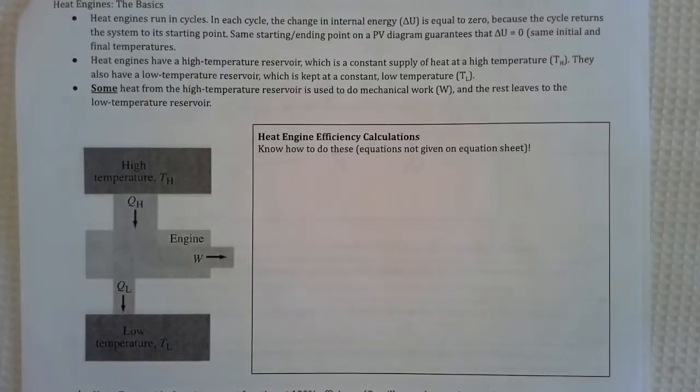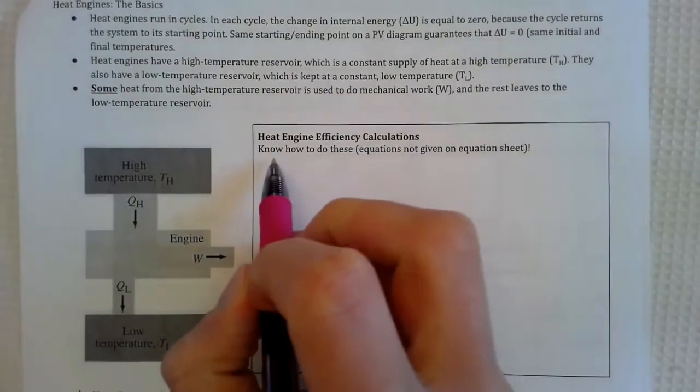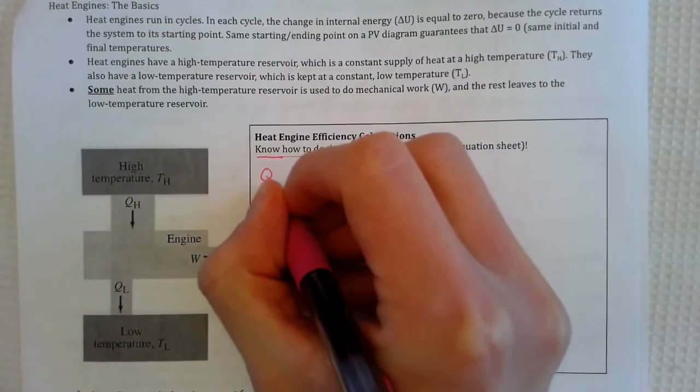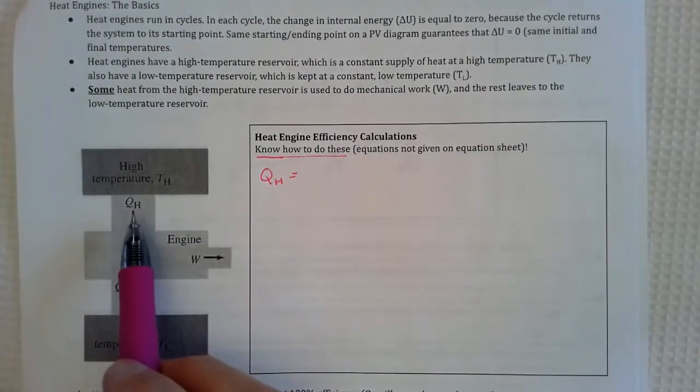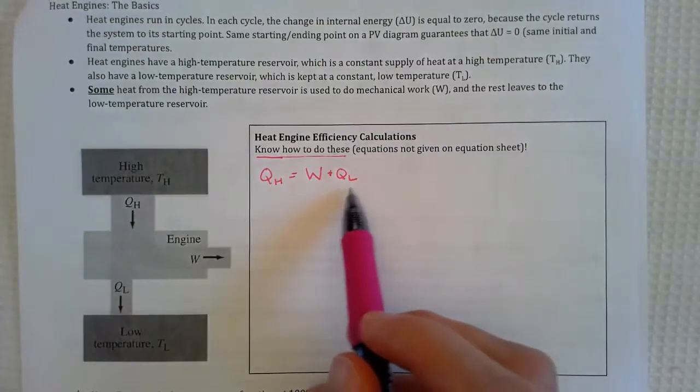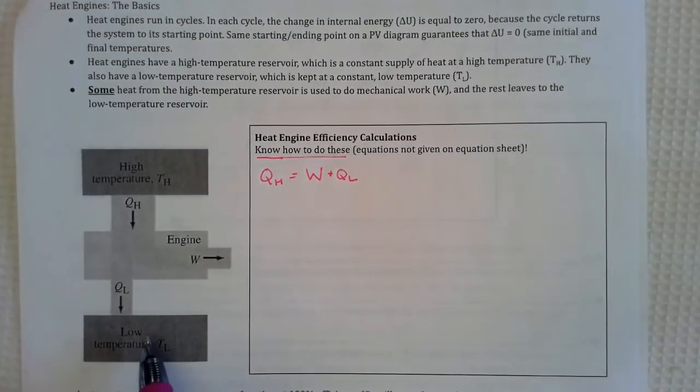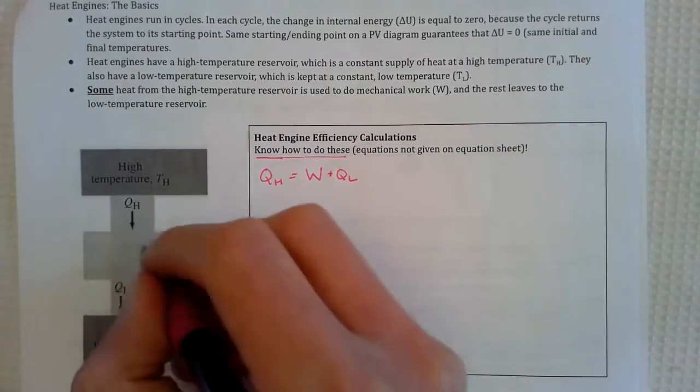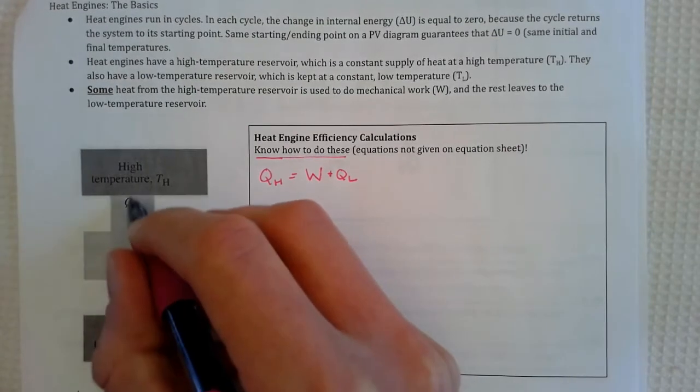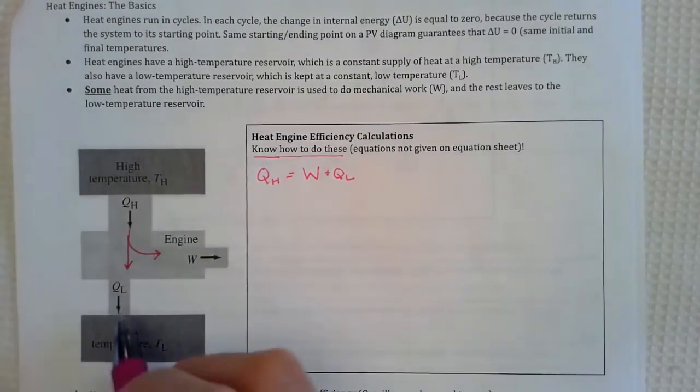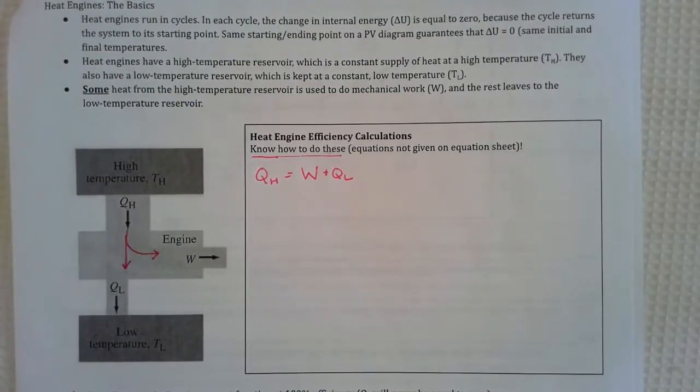Let's walk through the heat engine efficiency calculation together. You have to know how to do this because this equation is not on the equation sheet. But a great starting point is to remember that the heat that we start with from the high temperature reservoir has to go to two places and two places only. And that's the work that's done by the engine and then the waste heat or the heat that gets dumped into the low temperature reservoir over here. So those two things always have to add up to give you the heat that you started with. You can imagine we want to divert as much as we can of this original heat into mechanical work. That's the useful stuff. But we always lose some to low heat. You can never have a heat engine with 100% efficiency.